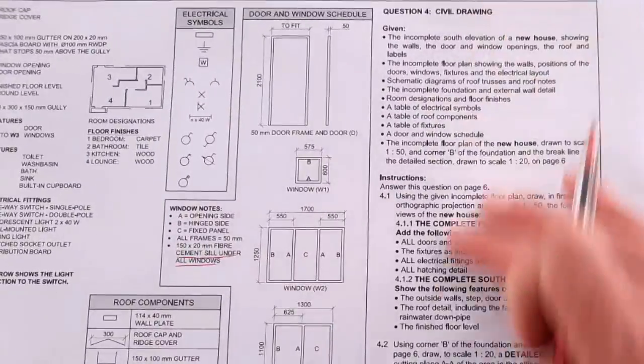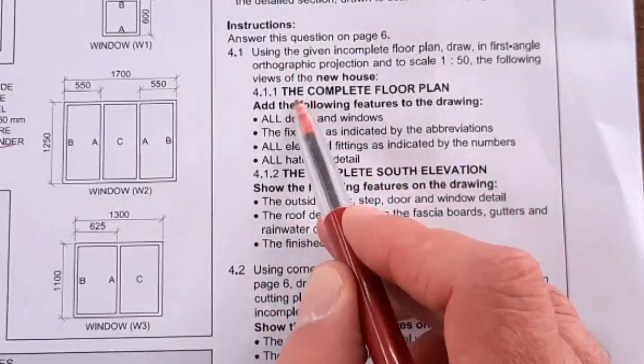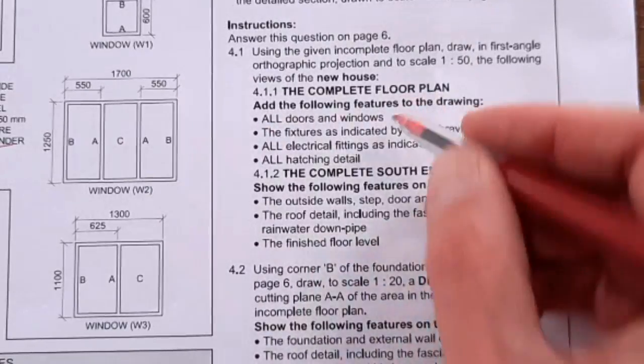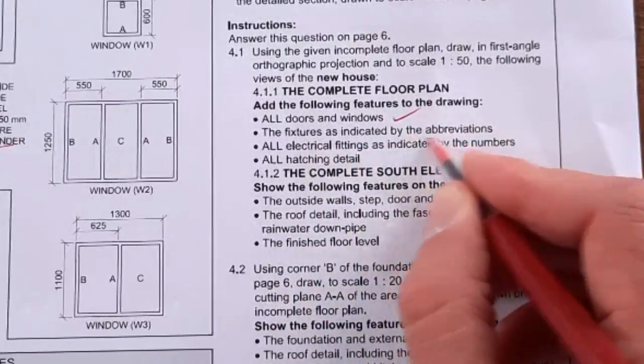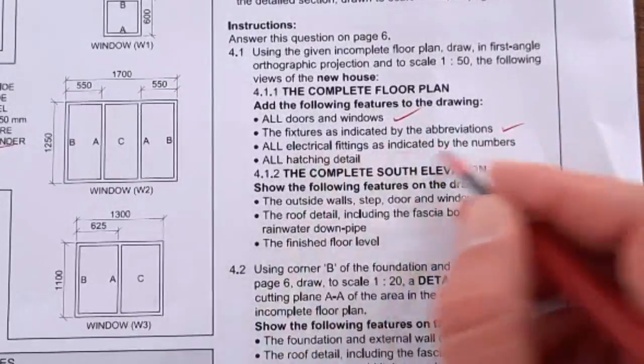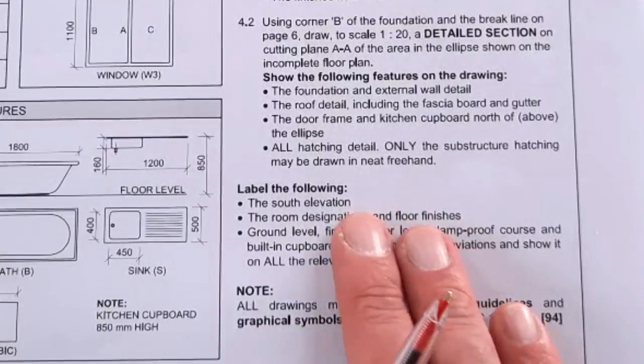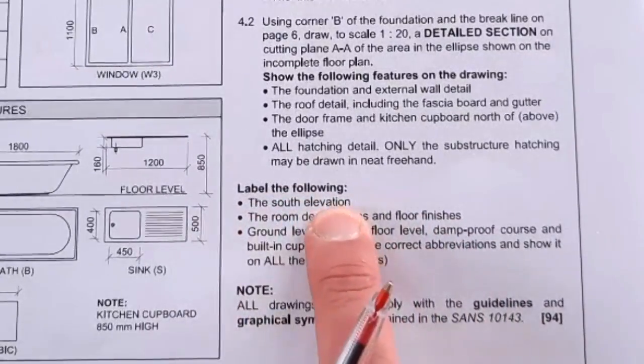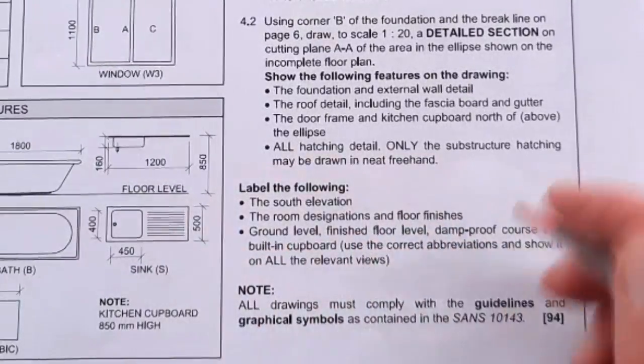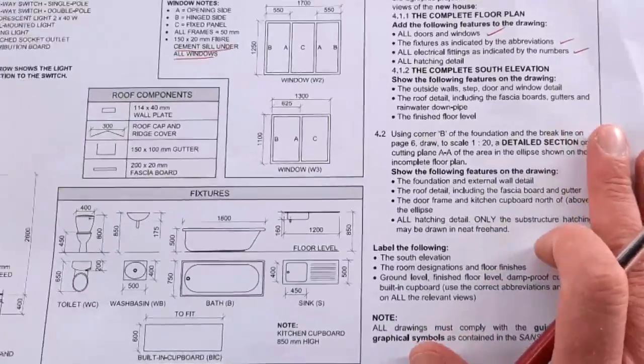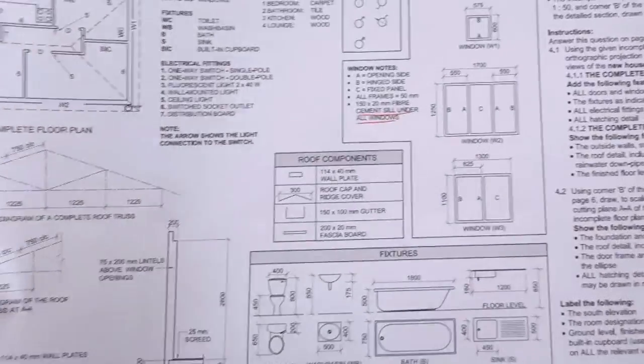In the question, use this as my checklist. They say complete the floor plan - add all doors and windows, tick it. All fixtures, check it. All electrical fittings as you do them, check it so you do not miss anything. Then label each view, the south elevation, room designations and floor finishes, ground level, finish floor level. This is a checklist, please do not skip over this.